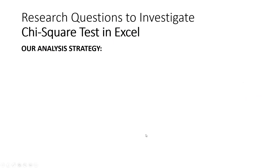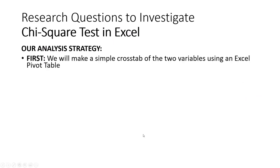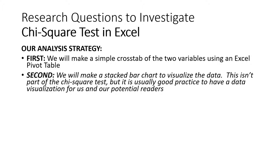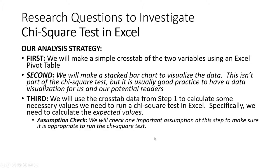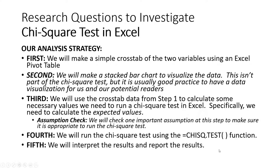Let's talk about how we're going to set up our analysis strategy to complete the chi-square test in Excel. First, we're going to make a simple crosstab of the two variables using the Excel pivot table. Then, we're going to make a stacked bar chart to visualize this data — this isn't technically part of the chi-square test, but it's usually good practice. Third, we'll use the crosstab data to calculate expected values. At that stage we'll pause and check an underlying assumption of the chi-square test. Fourth, we'll complete the chi-square test using a simple Excel function. Then finally, we'll interpret and report the results.